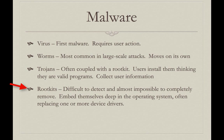Rootkits are applications that can take the place of a device driver, fitting in between the device driver and the user, collecting information the user is providing, and they hide themselves from anti-malware solutions. They don't show up when you're looking at processes running on a system. If you're infected by a rootkit, usually the best thing you can do is wipe your hard drive and start over. This is why images are very important in organizations — we simply re-image the machine, it clears all the malware, and the user is back up and running in a very short time.